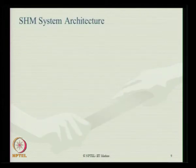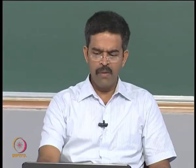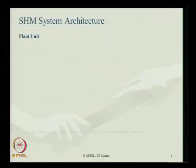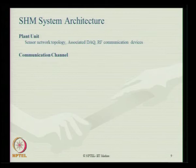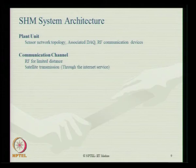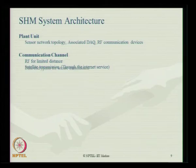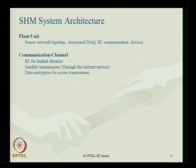Looking at the SHM system architecture, it should have a plant unit consisting of sensor network topology, associated data acquisition systems, and RF communication devices. The communication channels must use RF for limited distance; for very large distances, one must use satellite transmissions through internet and intranet services. Data encryption is also to be done for secure transmission.